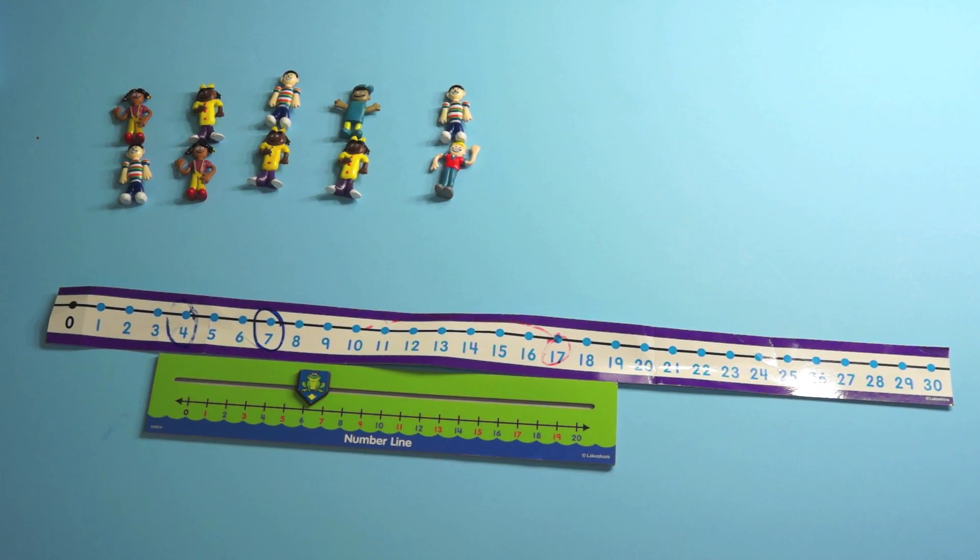The critical areas for second grade start out really with place value. The operations and algebraic thinking domain is really supposed to become very secure in first grade. But then you get to the base 10 domain and children are really going to do a lot in that domain.